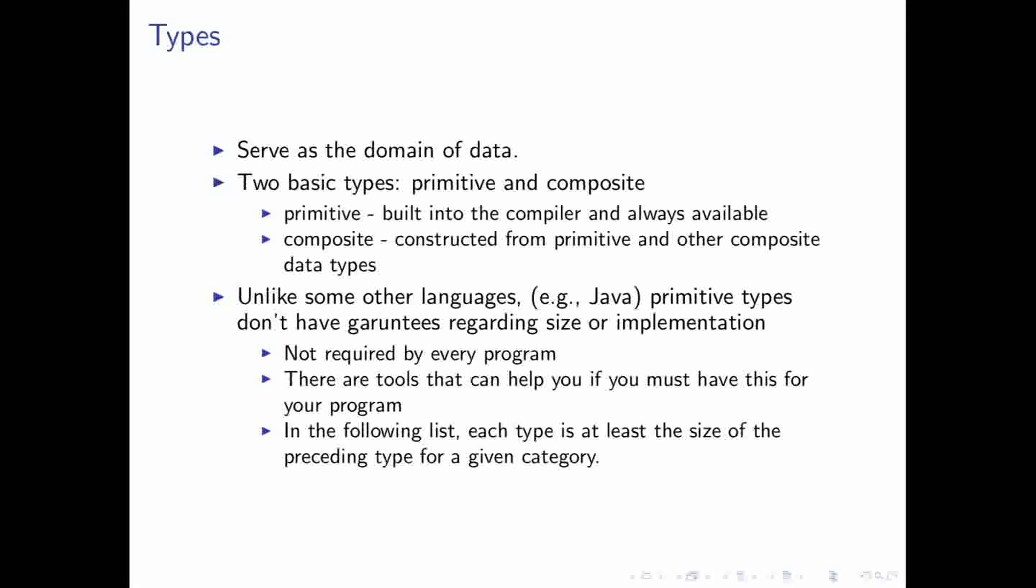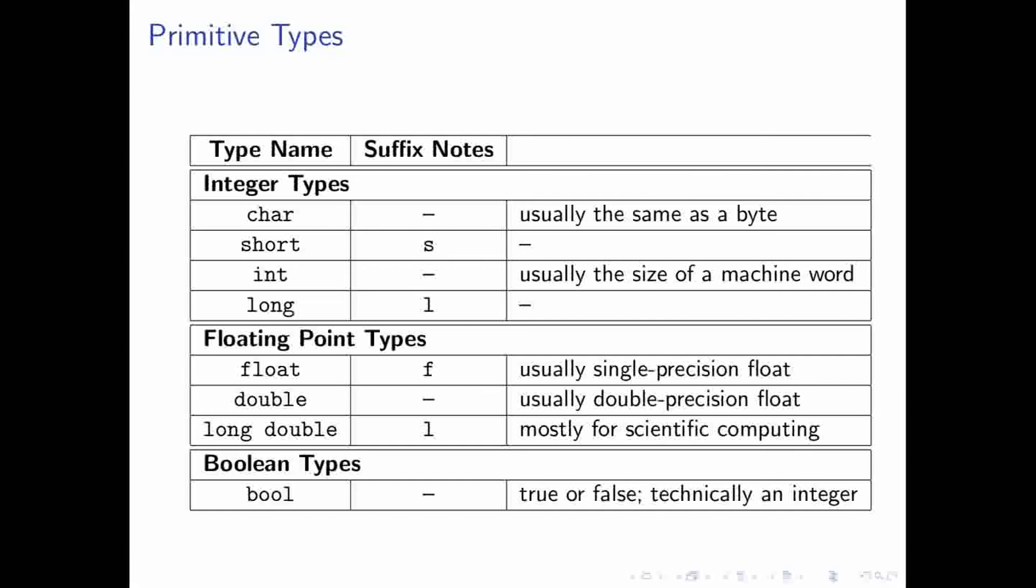So, what primitive types do we have? Well, we have a great many. You can see here that we have four integer types and also three floating point types and a special Boolean type.